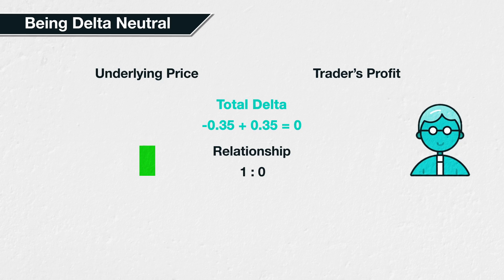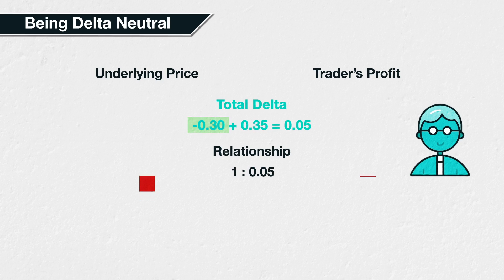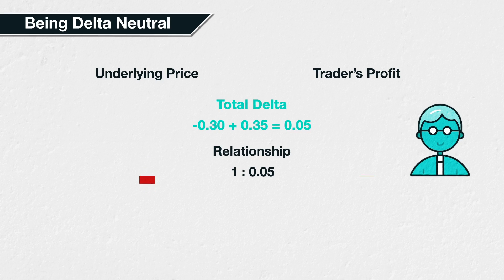Now, suppose two days pass. As we covered in lecture 8.4, the simple passage of time can change the delta of options, even if everything else remains exactly the same. As this is an out-of-the-money call option, the passage of time will decrease the delta of the call option. Let's say the delta has reduced to 0.3, leaving the trader with minus 0.3 delta for this call as they are short. Their futures position remains unchanged though, and still has a delta of 0.35, leaving their total delta, including the hedge, at positive 0.05. Even though they haven't changed anything about their position, and the only thing that has happened is some time passing, they are now no longer delta neutral.